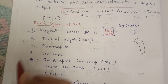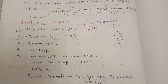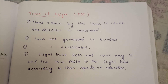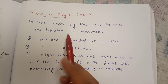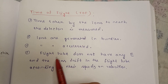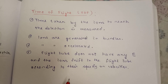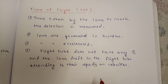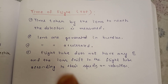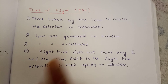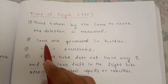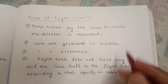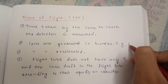Now let's look at the second type: Time of Flight, or TOF. In TOF, the time taken by ions to reach the detector is measured. There are many types of ions of different sizes — the smaller ones travel fast to the detector and the larger ones travel slow. The time taken by these ions is what is detected.